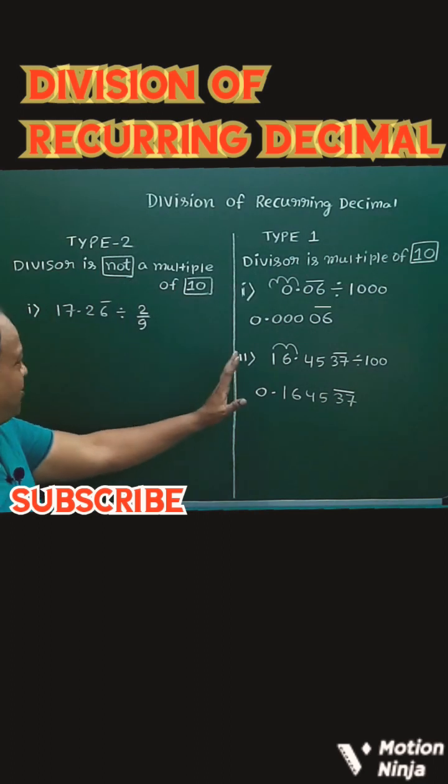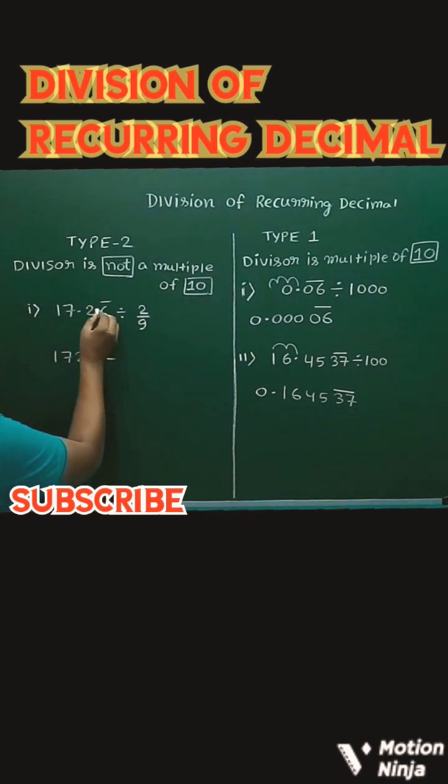Now, in Type 2, if the divisor is not a multiple of 10: 17.26 bar can be written as 1726 minus. Now see, before the bar starts, what is the number? 172.